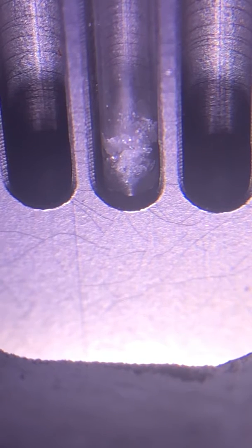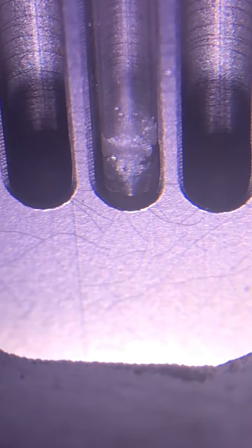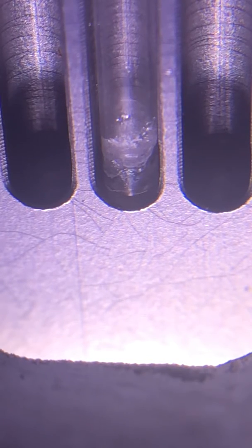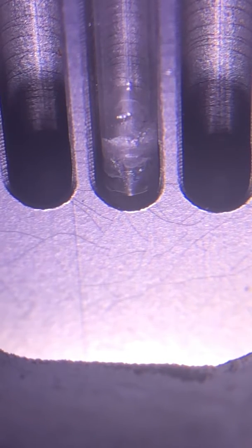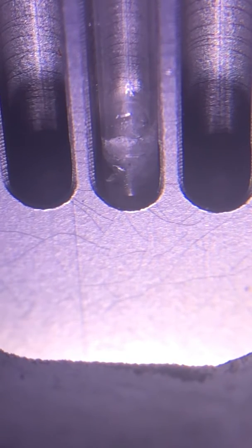This is 121.6. We're at 122 and what we're looking for is the clear point when the entire sample melts. It's a little hard to see in this view actually.